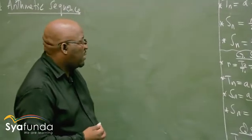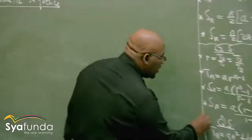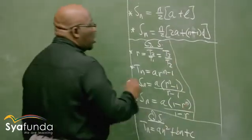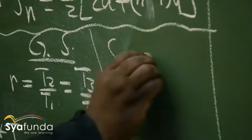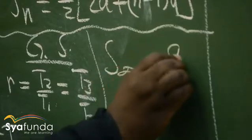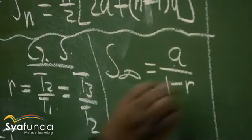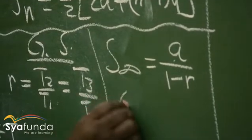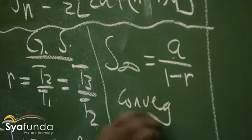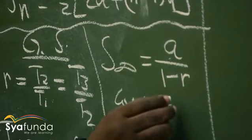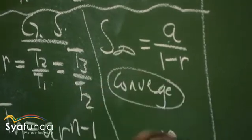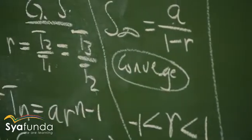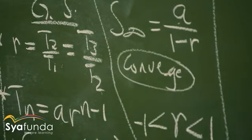There's another part that I want us to talk about with the geometric sequence. Remember, each geometric sequence will also have a sum to infinity, which equals a over 1 minus r. It is only the geometric sequence that will converge. Whenever you see the word 'converge,' you must know that it has a common ratio, and it is where the common ratio is between minus 1 and 1.